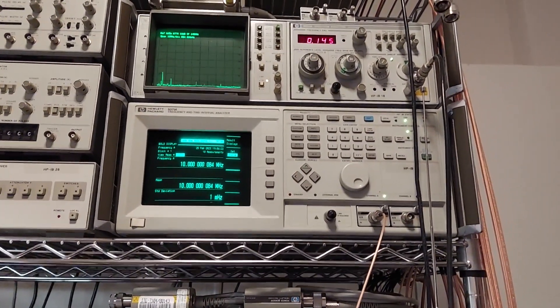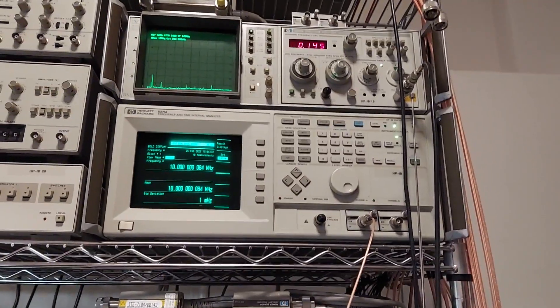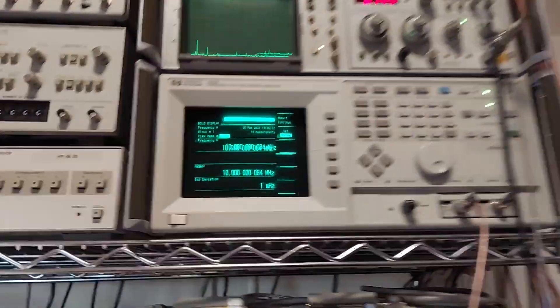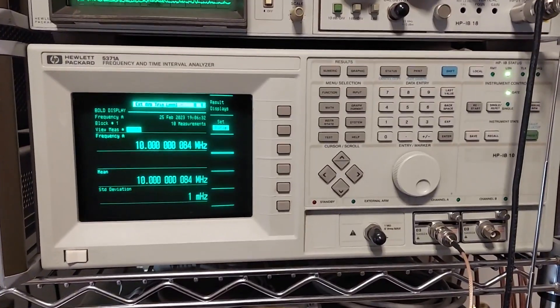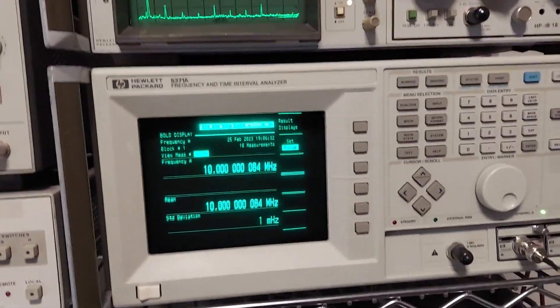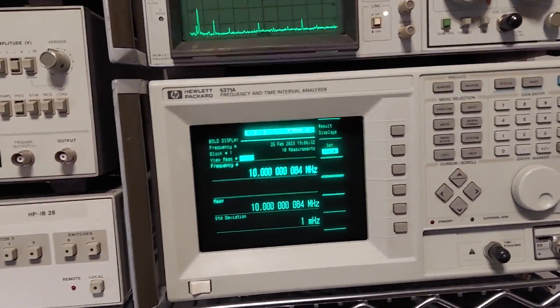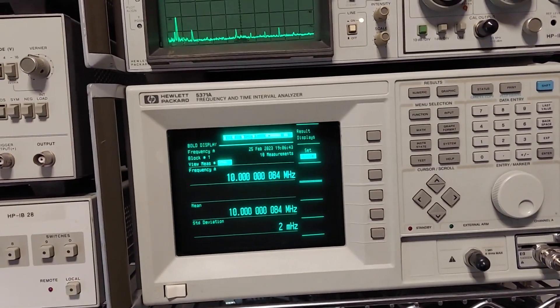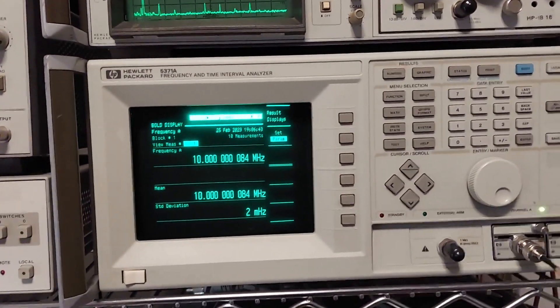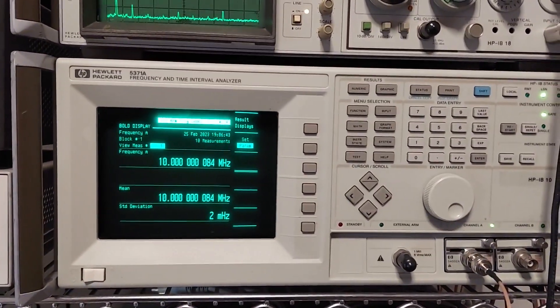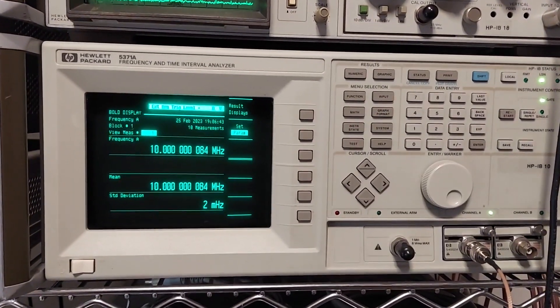Let's start here by running an Allen deviation plot and see what it comes up to. At 100 seconds or so, we should be within one part times 10 to the minus 11th. We'll fire up the computer and see how well this thing actually does.